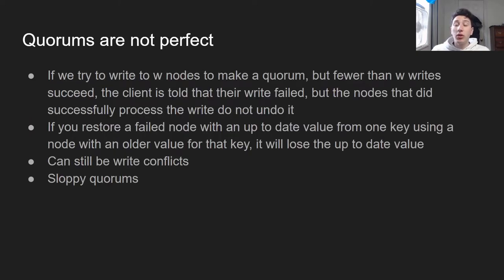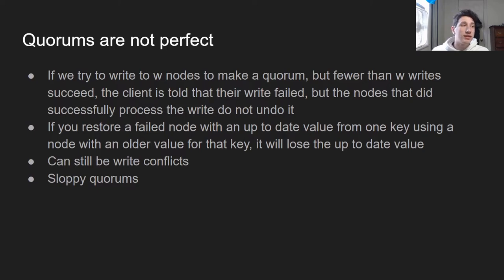Even though quorums give this illusion of a strongly consistent system where you can always get the most up-to-date value, it's not actually always the case. For example, if we try to write to w nodes but only manage to write to w-1 nodes, the client gets a message saying their write failed. However, those nodes that were successfully written to are not going to roll back. So now we have an incorrect write propagated on a few nodes, and it's unclear what we should do — should we roll it back eventually or keep it? Because then read repair might propagate that value along, putting the database in an inconsistent state.